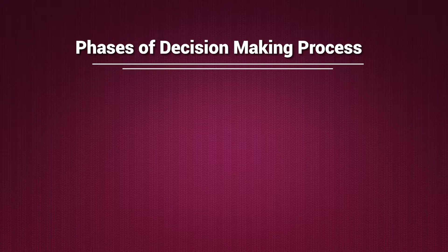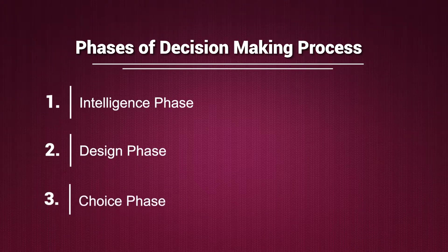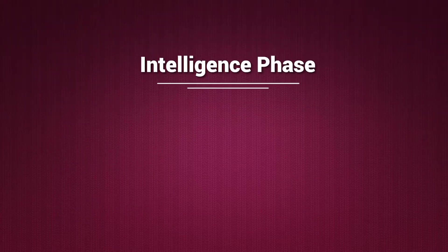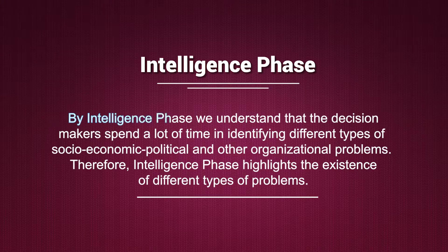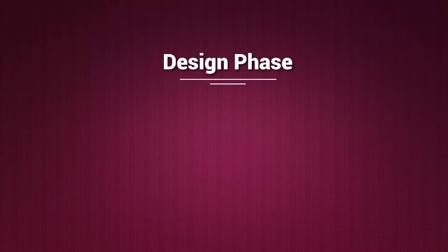Herbert Simon's bounded rationality remains incomplete if we do not discuss the phases of decision making. The phases of decision making are marked by three important stages. One, the intelligence phase — by which we understand that decision makers spend a lot of time identifying different types of socio-economic, political, and other organizational problems. Therefore, the intelligence phase highlights the existence of different types of problems.